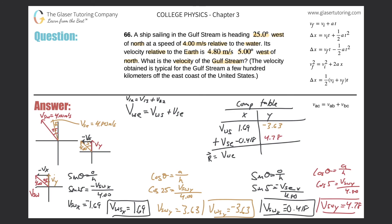Now with the component table set up, we add the x and y values separately. For x: 1.69 plus (negative 0.418) equals 1.27. For y: negative 3.63 plus 4.78 equals 1.15. These are the components of the resultant vector — the velocity of the water relative to the earth.